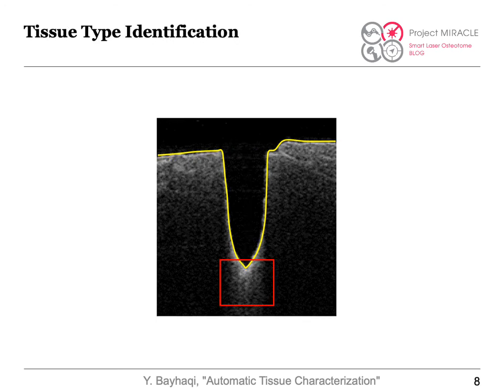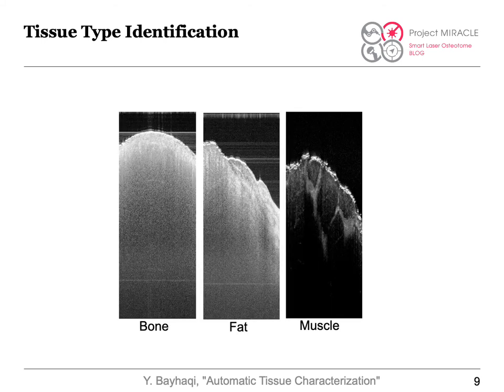After getting the edges of the surface with the OCT images, we can identify the tissue type from the OCT images.